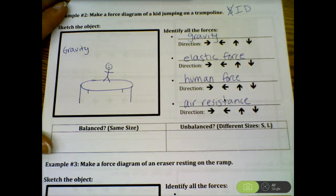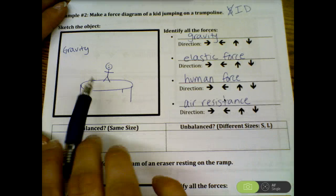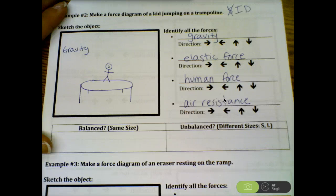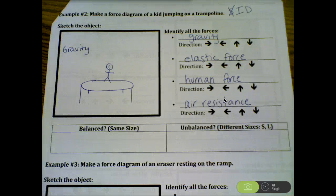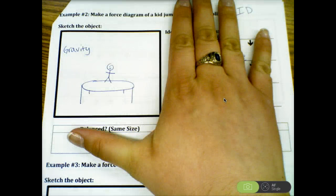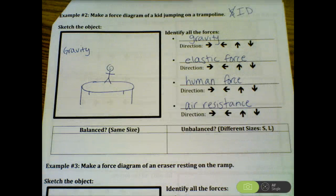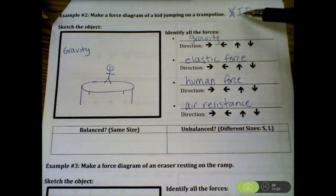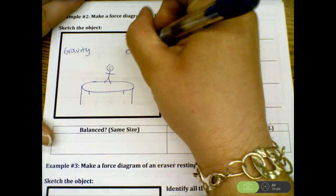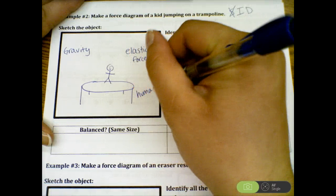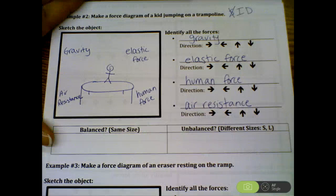The next thing we need to do is identify the forces on our picture. Something that I saw was you did all the work on the side of your paper, but you didn't actually add the forces and the arrows to your picture. This is going to end up being your force diagram. All of this is just to help you organize those thoughts and keep you on track. When it comes to the test, you're just going to have a blank piece of paper and you need to make sure you know what to do. I need to take my thoughts over here and put it onto the picture. So I'm going to go ahead and put elastic force, human force, and air resistance. Now I have identified the forces. I can check that off.